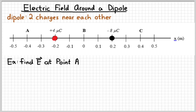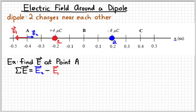Calling the positive charge 'charge 1' in red, it would tend to create an electric field at point A going to the left. The negative 'charge 2' in blue would tend to create an electric field going to the right. Since they're in opposite directions, we'll subtract them. I'm going to guess that E2 is larger than E1 — if we get a negative answer, that means we guessed wrong and the electric field is really to the left.